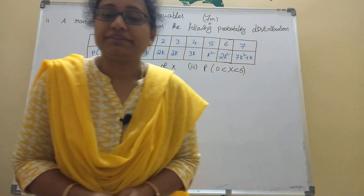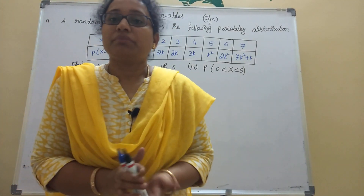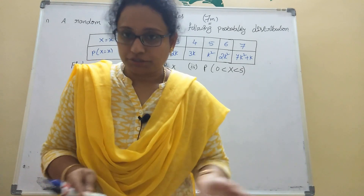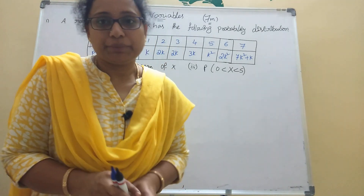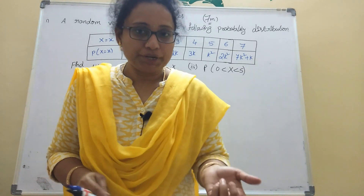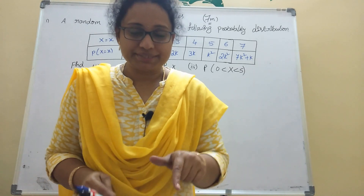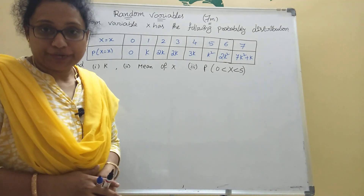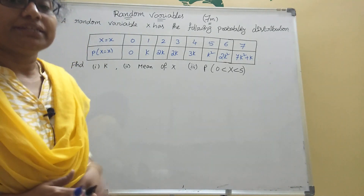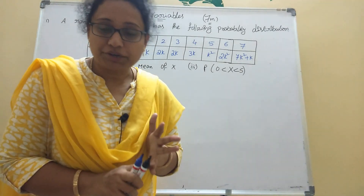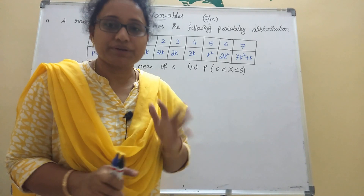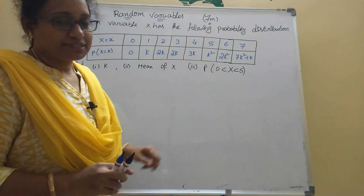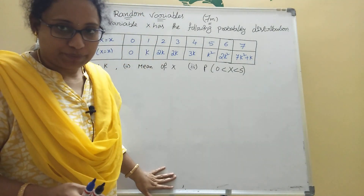Hi children, welcome to my channel. Today I am explaining an intermediate second year topic for Andhra and Telangana students. The topic is random variables — the last chapter. It carries seven marks and one or two marks, total nine marks, and I am explaining the seven marks problems here.